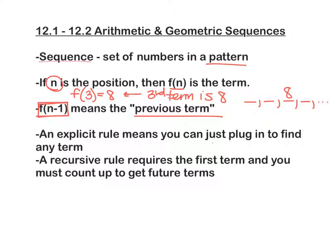The last two definitions you need to know: an explicit rule means you can just plug in to find any term. And a recursive rule requires the first term and you must count up to get future terms. Now you're going to see what I mean by that here in a minute, but I would maybe just write that down and then I'll show you the difference between the two.